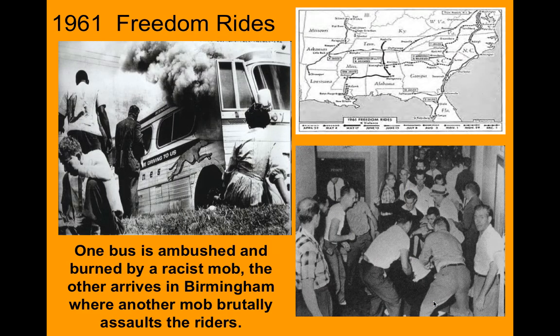In 1961, there was a coalition movement with CORE, SCLC, and SNCC to get African Americans to be able to ride on federal highways throughout the South and expose the hatred there. These were called Freedom Rides, and in 1961 these Freedom Riders were attacked. They also wanted to go into the South to register young African Americans to vote.